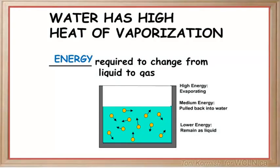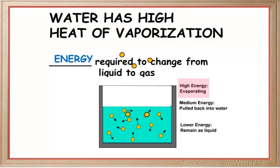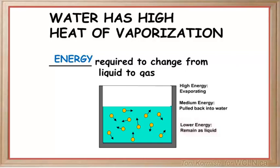Secondly, water has a high heat of evaporation. This property allows water to help maintain body temperature despite external conditions. If we get too hot, the higher energy molecules evaporate off of our skin, leaving the lower energy molecules behind, thereby cooling the body in a process called evaporative cooling.